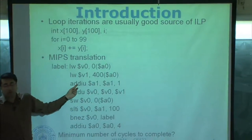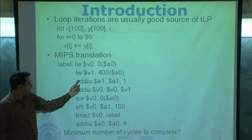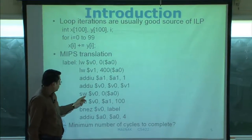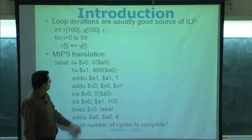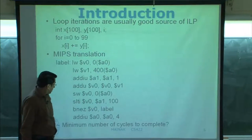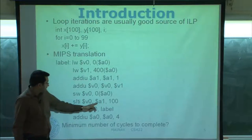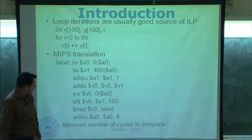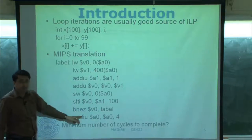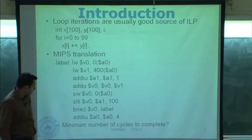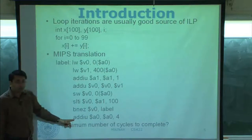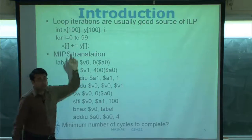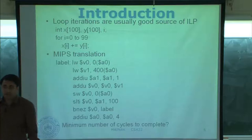This one could not be put here because of the load delay slot — they have to be delayed by one cycle. Then this one stores the value back to x[i] at the same address. This one compares dollar a1 against 100; if it is already there it sets dollar v0 to 1. This one checks if v0 is already 1; if not, goes back and executes it. The branch delay slot is always executed and increments the address by 4, because these are integer arrays, to take you to the next element of the array.